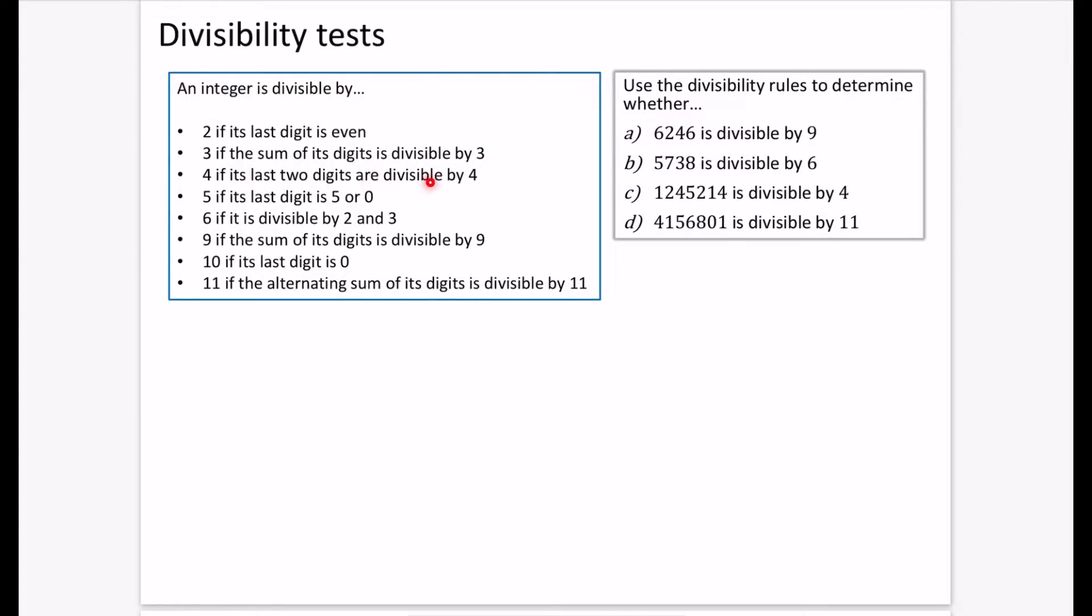For four, the last two digits are divisible by four. For five, it ends in five or zero. For six, it has to be divisible by two and three, because if you think about the prime factor decomposition of six, it is two times three. For nine, if the sum of the digits is divisible by nine, it's divisible by nine.